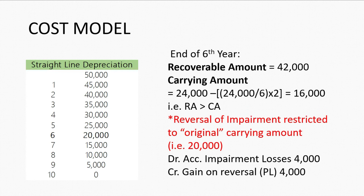Two years later the new carrying amount is $16,000 and the recoverable amount is found to be $42,000. Although the recoverable amount is much higher, the reversal of impairment loss cannot exceed the carrying amount in the case where no previous impairment loss had been recognized — meaning the reversal is capped at $20,000. Therefore we debit accumulated impairment loss by $4,000, which is the difference between the new and original carrying amounts, and credit gain on reversal in the profit and loss account by $4,000.